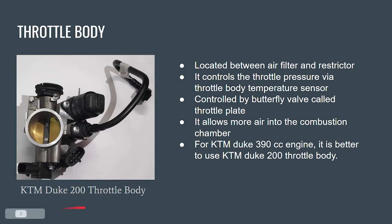We are using a KTM RC 390 engine, and it is better to use a KTM Duke 200 throttle body since it has a lesser diameter. It is observed that at a certain point during throttling, the 390's throttle body causes the 20 mm restrictor to saturate with air flow, making the rest of the throttle travel useless. Due to the decreased diameter of the 200 throttle body, this saturation point shifts to a much later stage, increasing the throttle response of the engine.